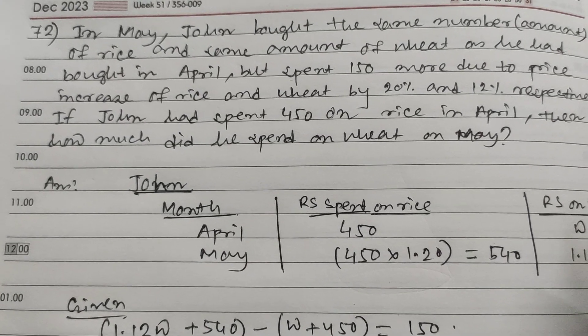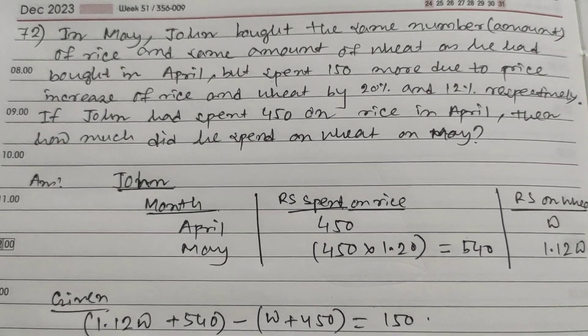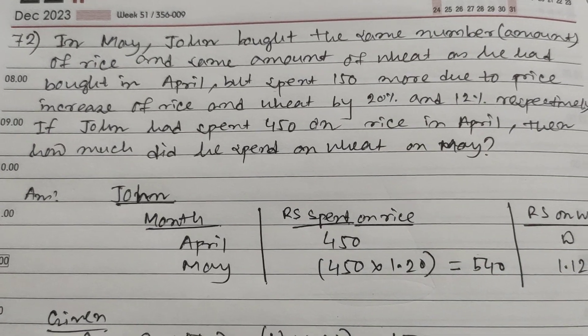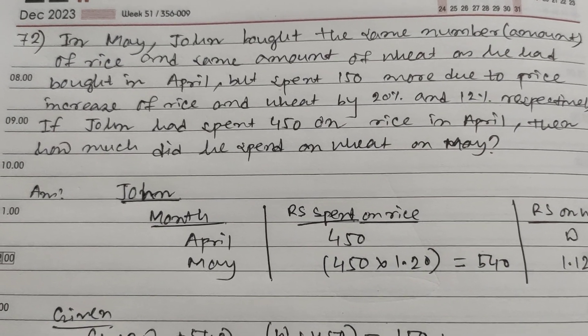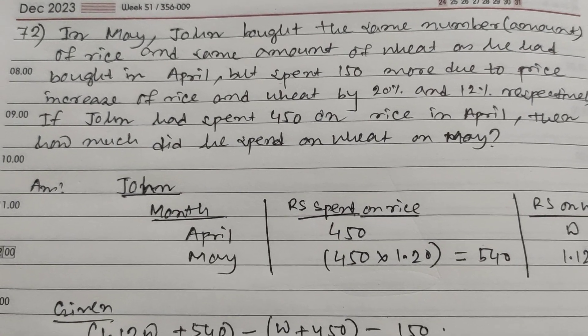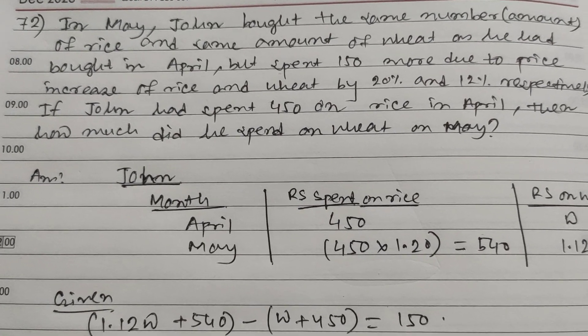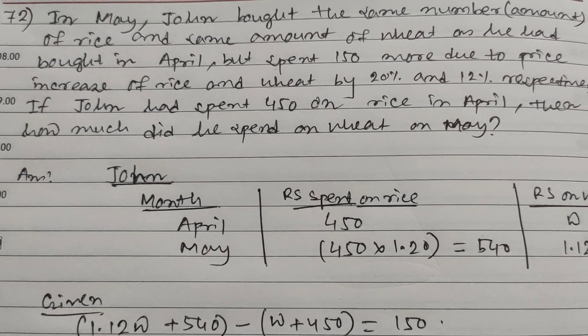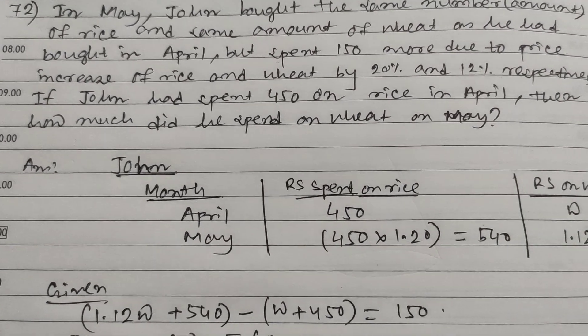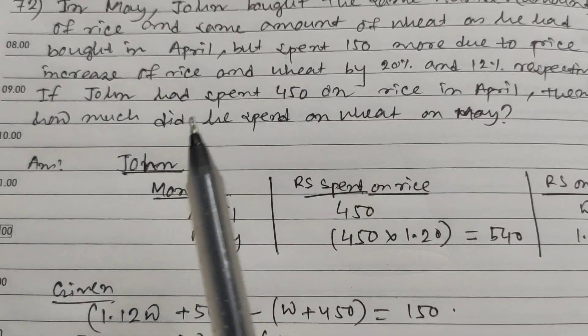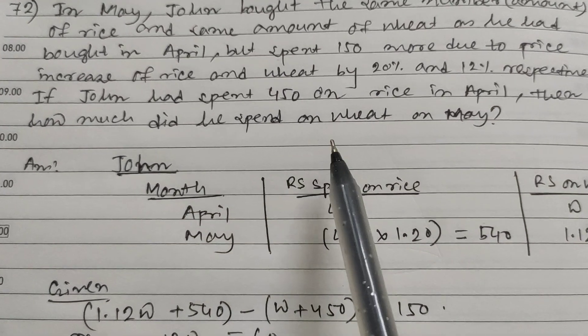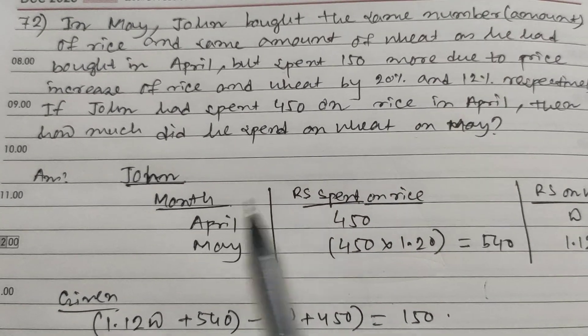Hi friends and students, this is question number 72. In May, John bought the same amount of rice and wheat as he had bought in April, but spent 150 more due to price increases of 20% for rice and 12% for wheat. If John spent 450 on rice in April, how much did he spend on wheat in May?